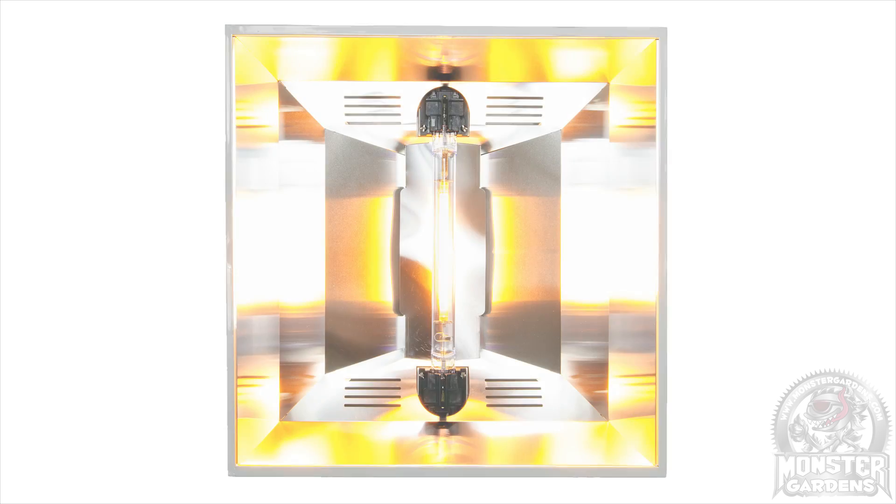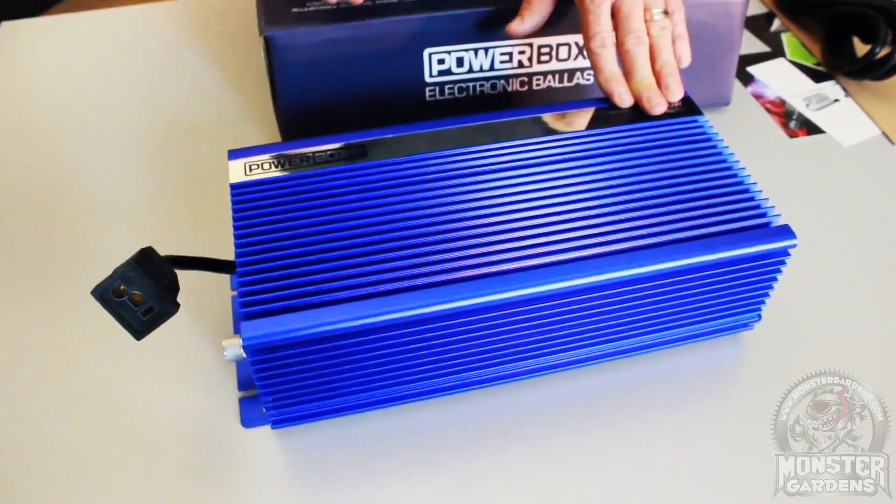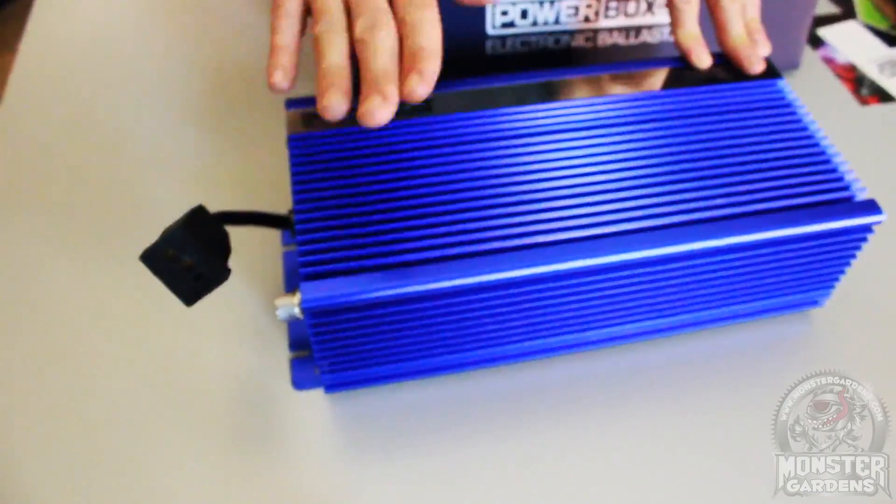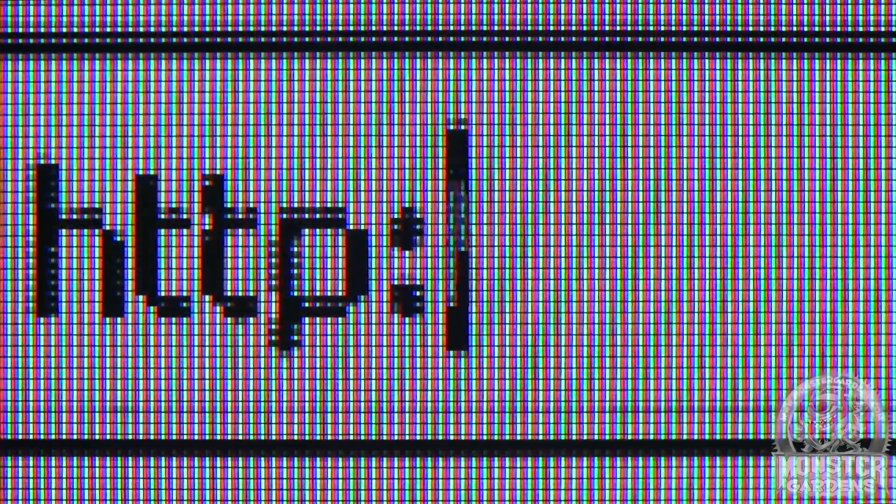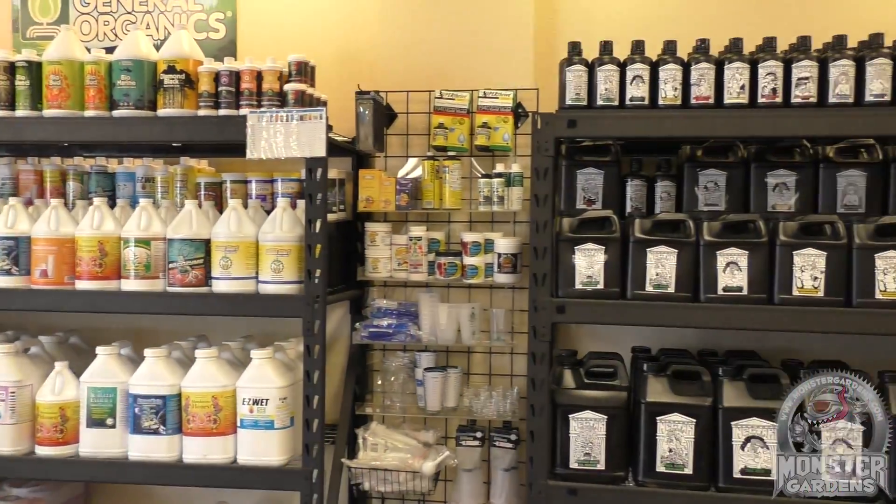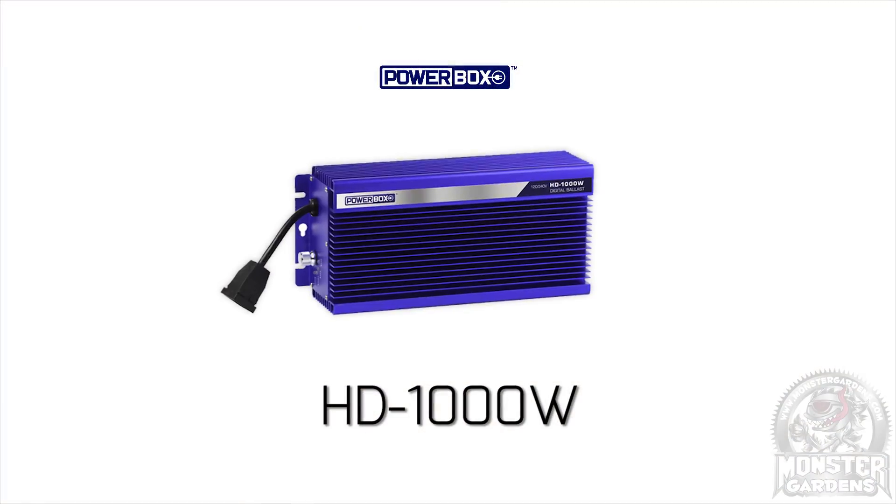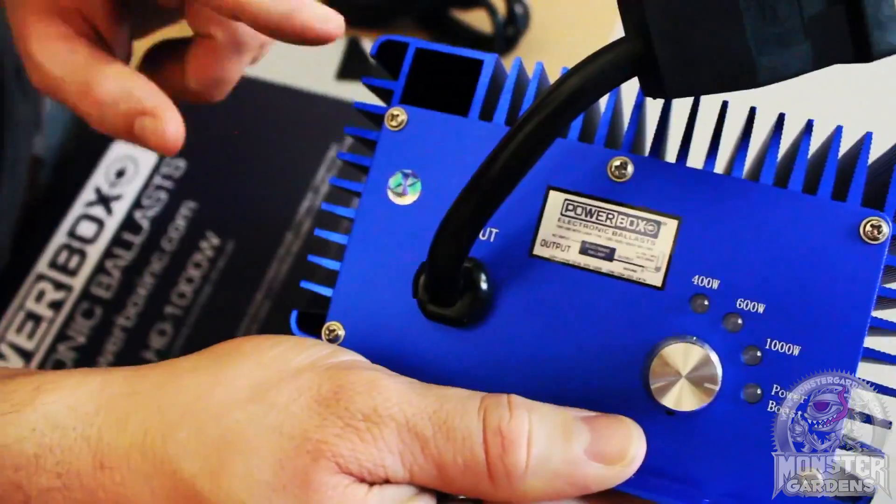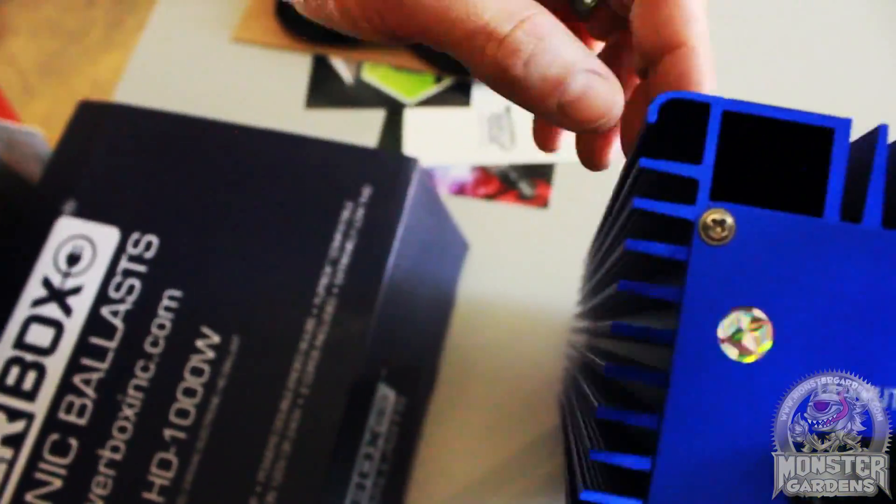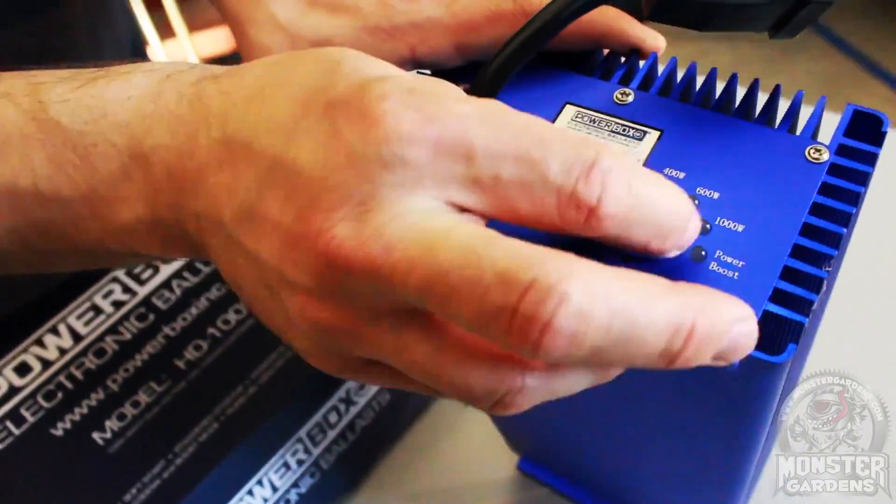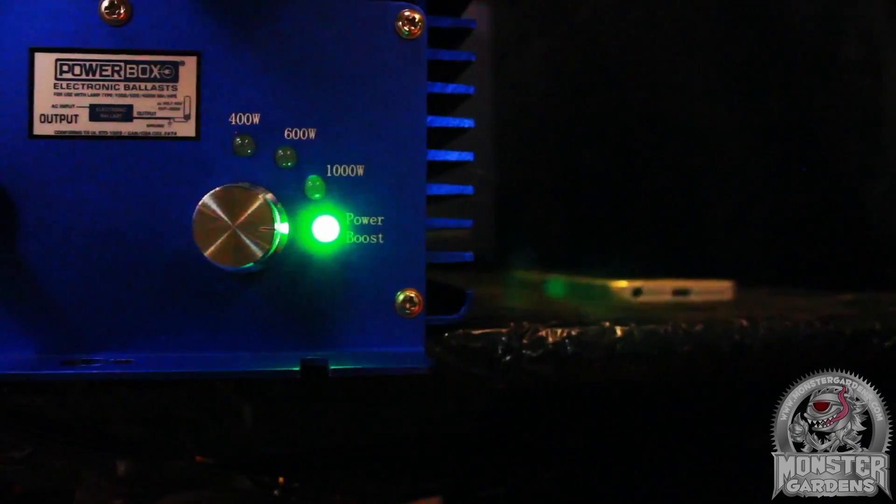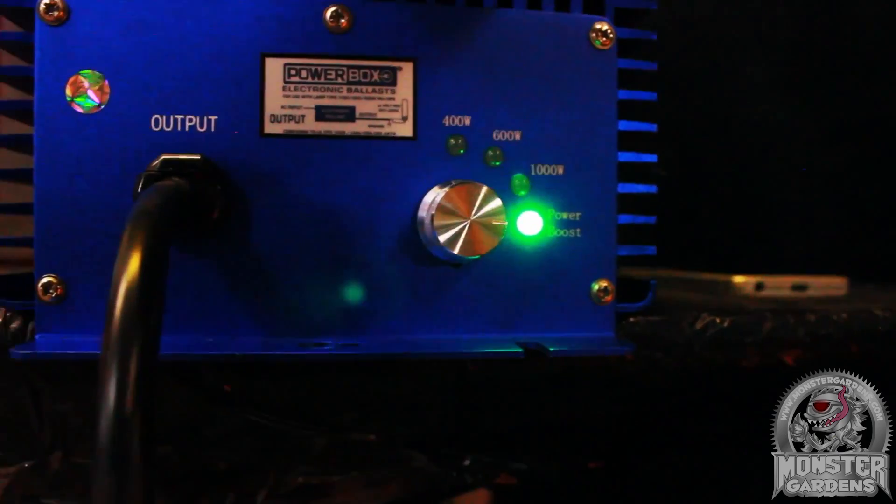Before we get to the hood, let's look at the ballast. For this test, I picked a ballast that was recommended by the sales guys at Monster Gardens retail store. It's one of the top sellers both online and physically in the store. The power box. It also had a reputation for not coming back broken. This is something that makes salespeople very happy, apparently. And it also means it should be able to take the heavy rigours of the sorts of tests I'm going to subject it to.